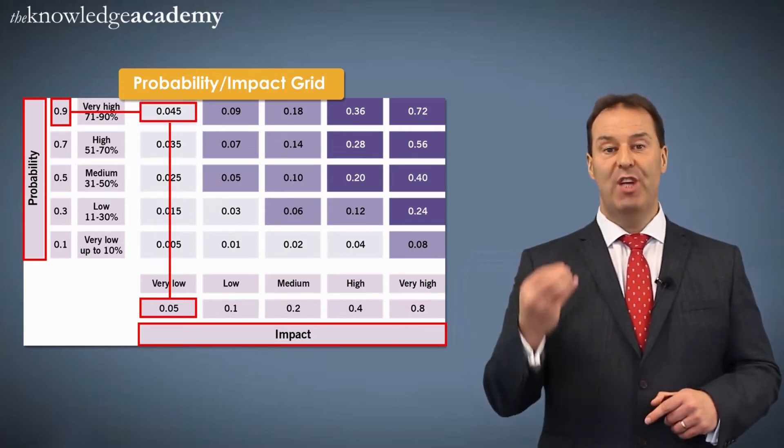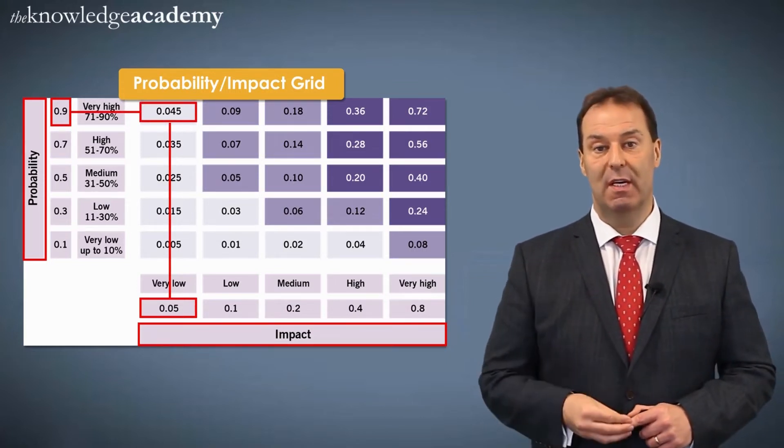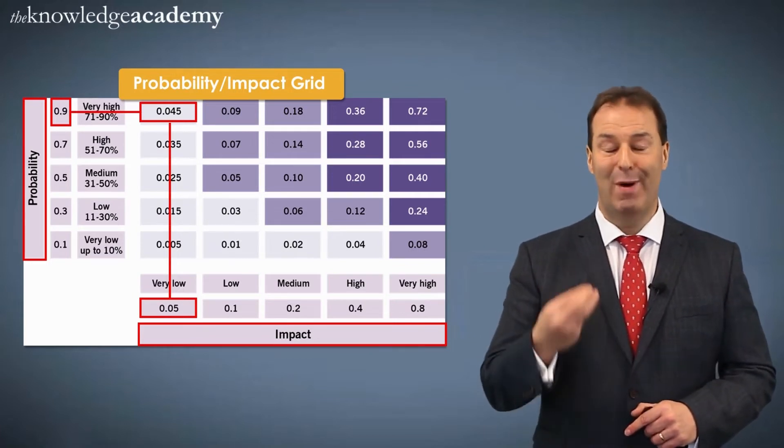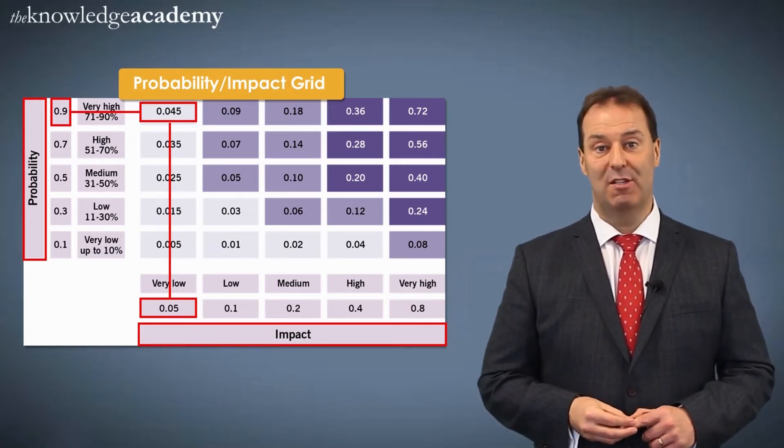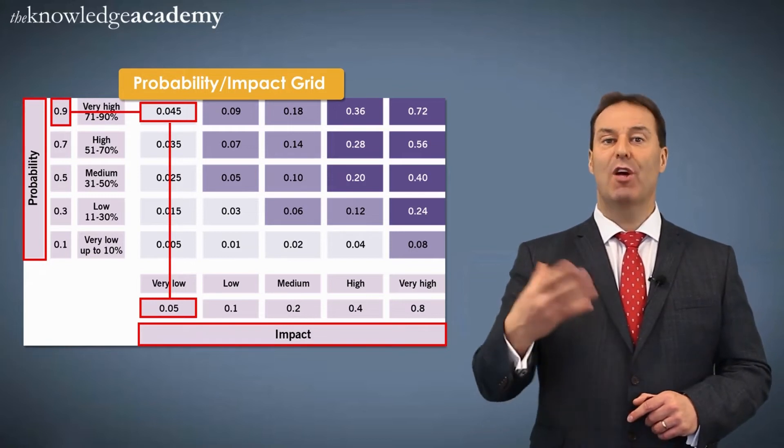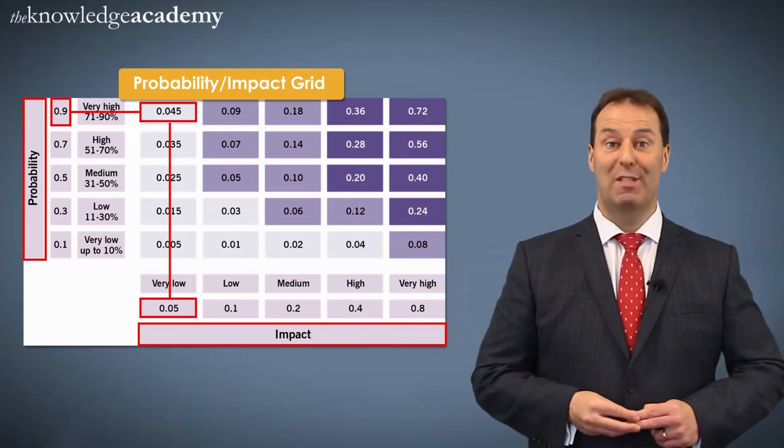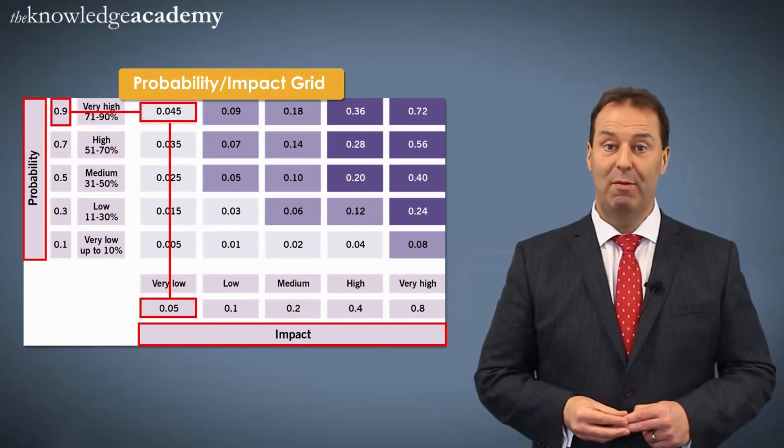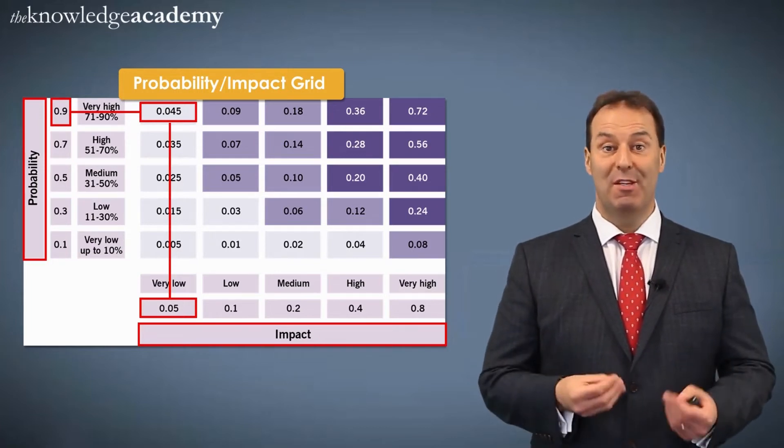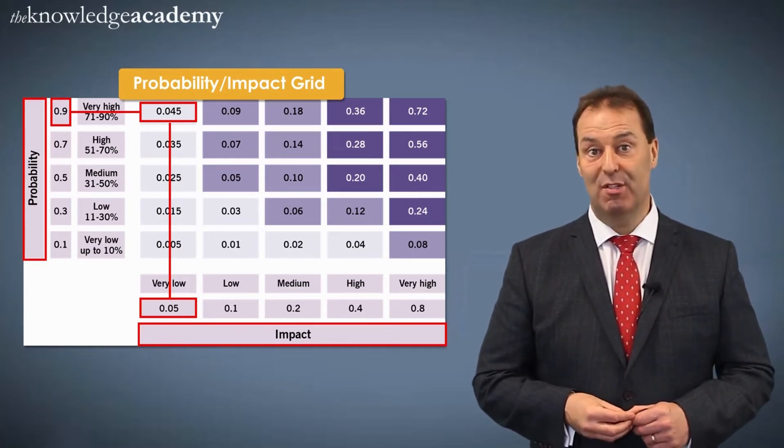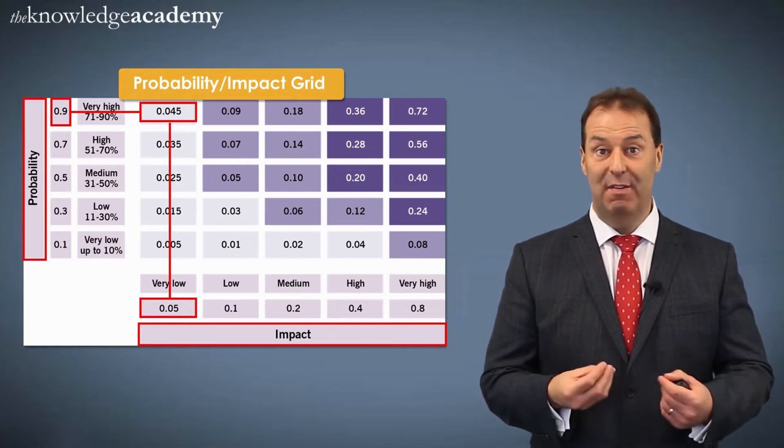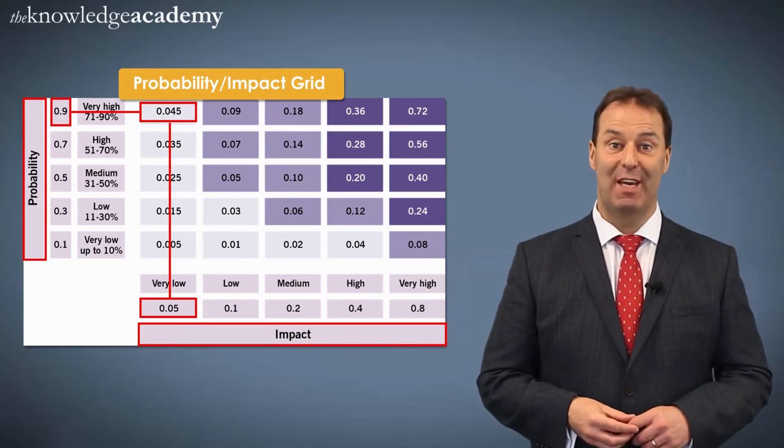The different shadings represent severity. The darker the shading, the more impact that risk potentially has. So the very dark shadings that you can see on this probability impact grid will probably result in the project manager having to escalate those risks to the next level of management for them to intervene to determine which action to take.